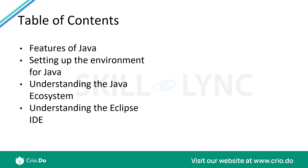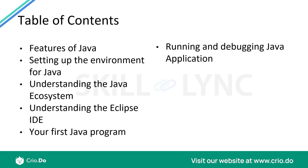We'll learn how to use Eclipse and the benefits it provides for productive Java coding. Then we'll write our very first Java program — and after that, there's no stopping. We'll see how to run a Java application and how to do some debugging. Debugging is a process to find bugs, problems, or errors in your program.